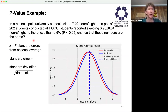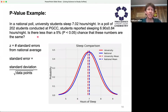In a poll of 202 students conducted at PGCC, students reported sleeping 6.90 hours, plus or minus 0.84 hours. And then the question is, is there less than a 5% chance with this p-value that these numbers are the same?